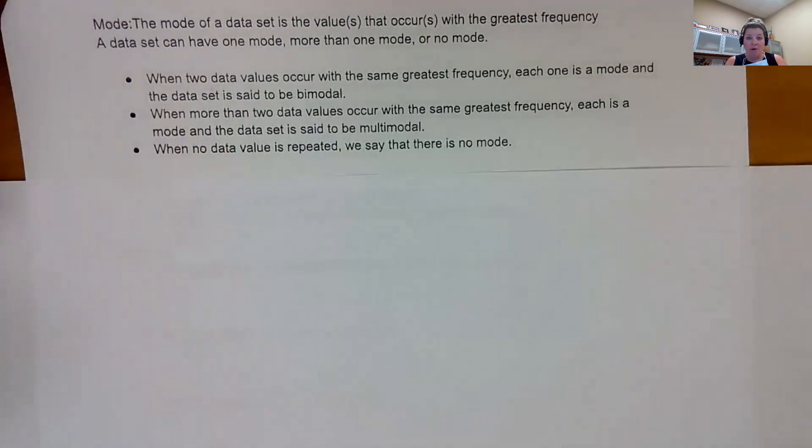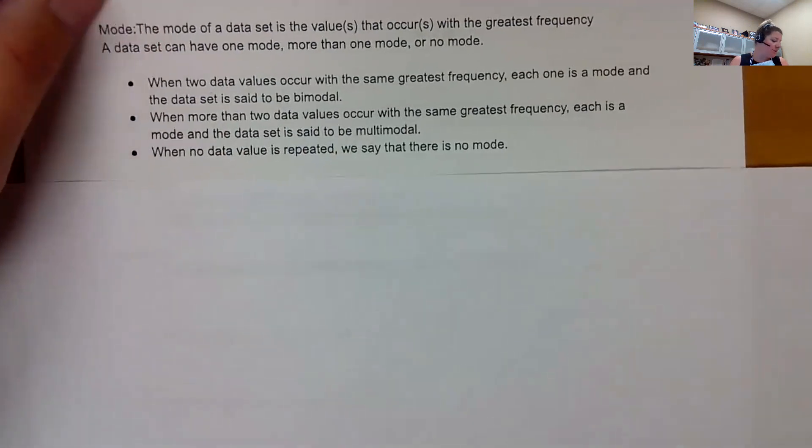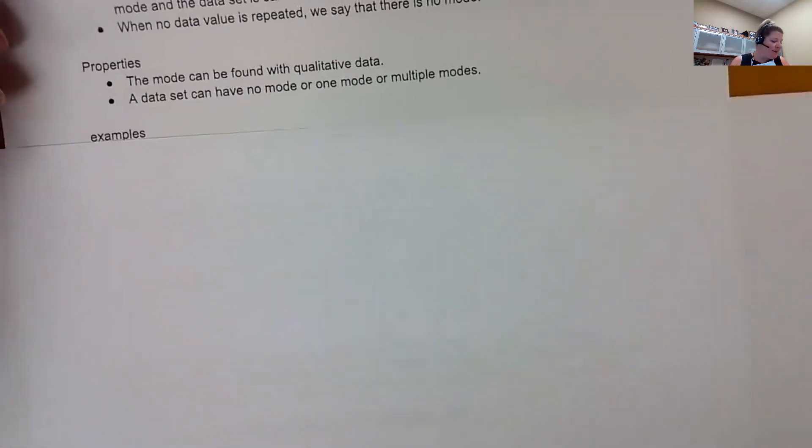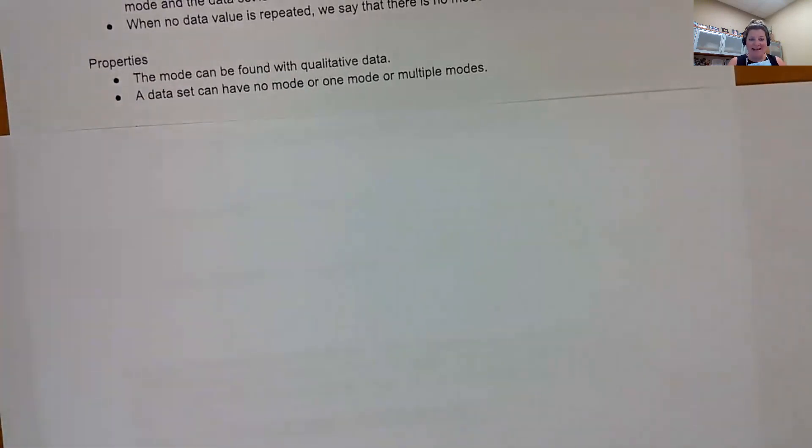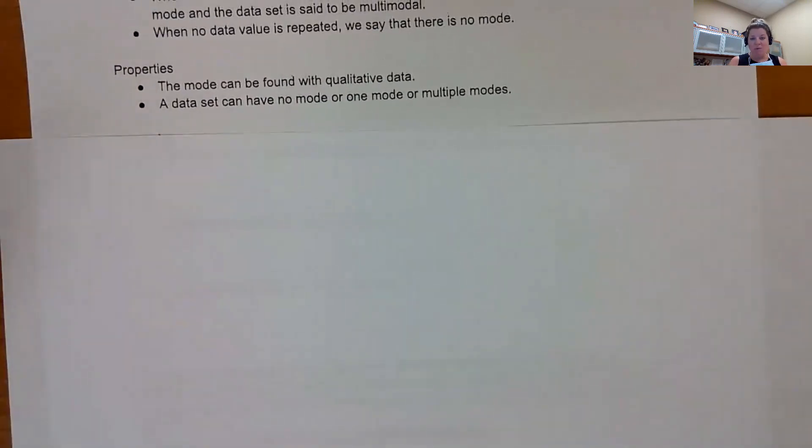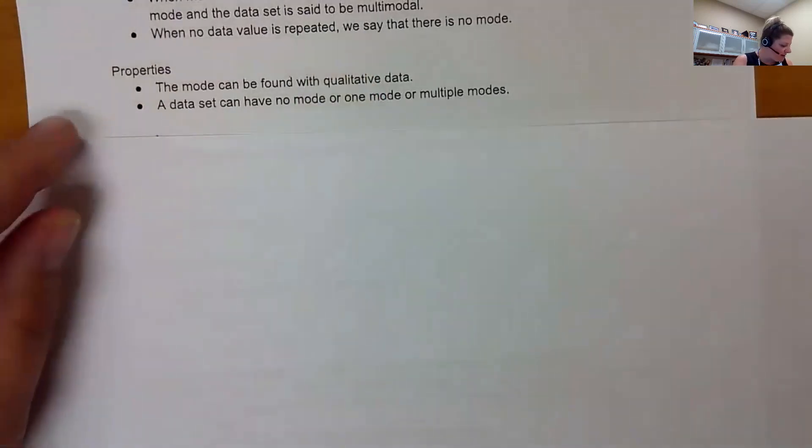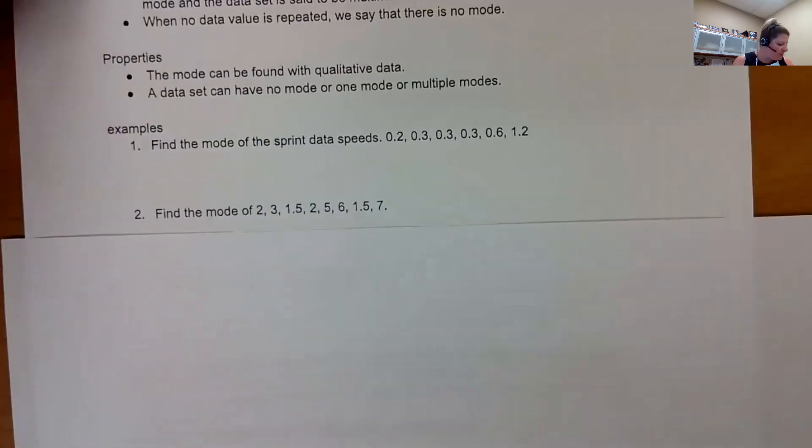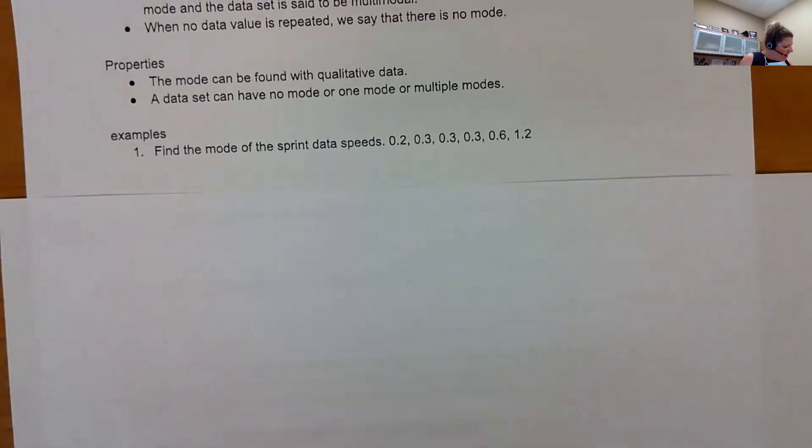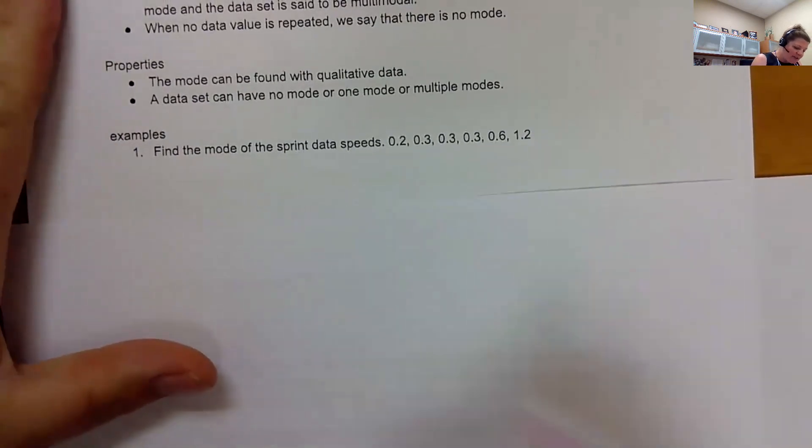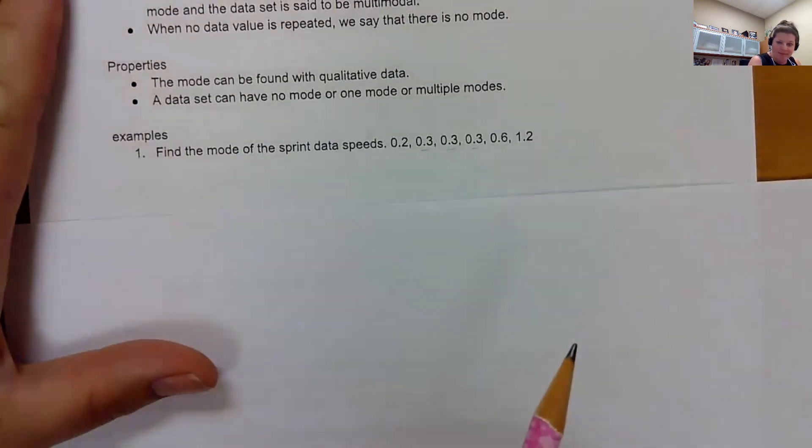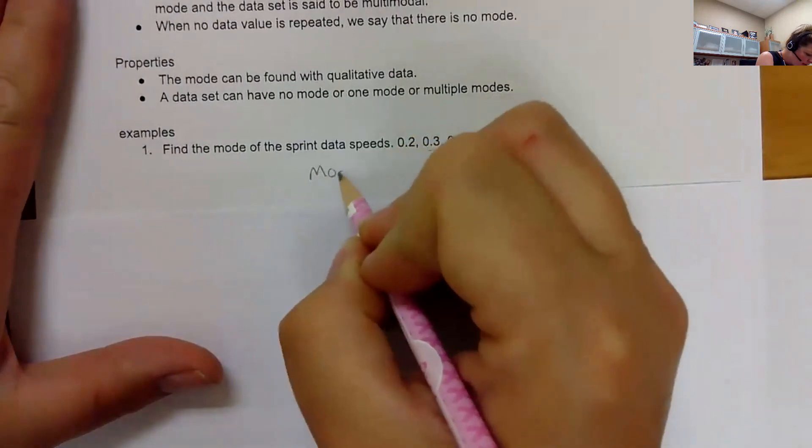When the data has no values that repeat themselves, we say no mode. Or if there starts to be a lot of modes, we say no mode. The go-to is usually three. So if you have four modes, we just say no mode. So let's find the mode of these sprint data speeds. What is the mode of this data set? I can see that the 0.3 happens three times and nothing else repeats itself. So the mode is going to be 0.3.